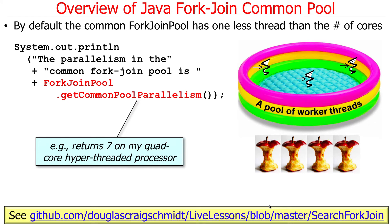By default, the common fork join pool has one less thread than the number of cores. You can find out how many cores you have or how many threads will be in your pool — it relates to the number of cores that the Java virtual machine thinks you have at your disposal. On my quad-core hyper-threaded processor, we have seven.